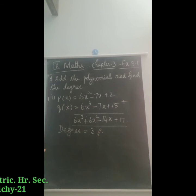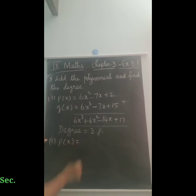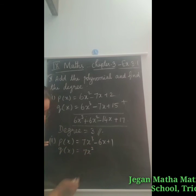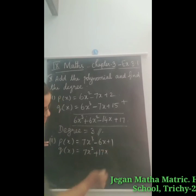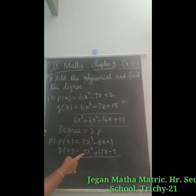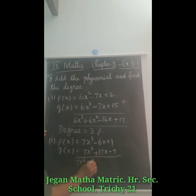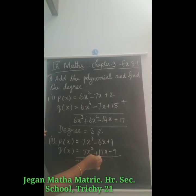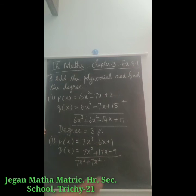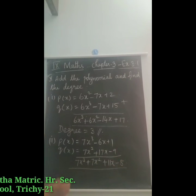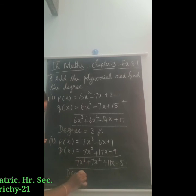Next question: P of x equals 7x cubed minus 6x plus 1, and Q of x equals 7x squared plus 17x minus 9. Adding them: 7x cubed as it is; plus 7x squared; for x terms: minus 6 plus 17 gives plus 11x; for constants: minus 9 plus 1 gives minus 8. The result is 7x cubed plus 7x squared plus 11x minus 8. The degree is equal to 3.